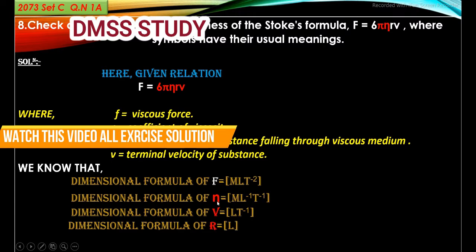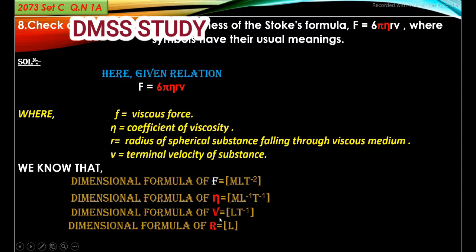Dimensional formula of coefficient of viscosity η is [ML⁻¹T⁻¹], dimensional formula of terminal velocity v is [LT⁻¹], and dimensional formula of radius r is length [L].